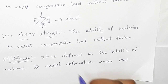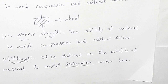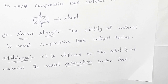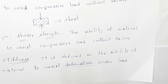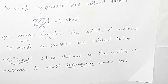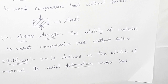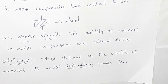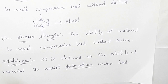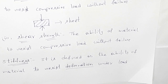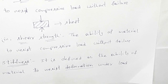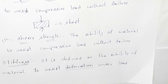Deformation — whatever metal we have, it has some dimensions: length, width, thickness. When we apply a load, the load acts and some load is withstood, but a change occurs. It is defined as the ability of a material to resist deformation under load. When load is applied to a component or material, it deforms. Stiffness is the resistance to that deformation.